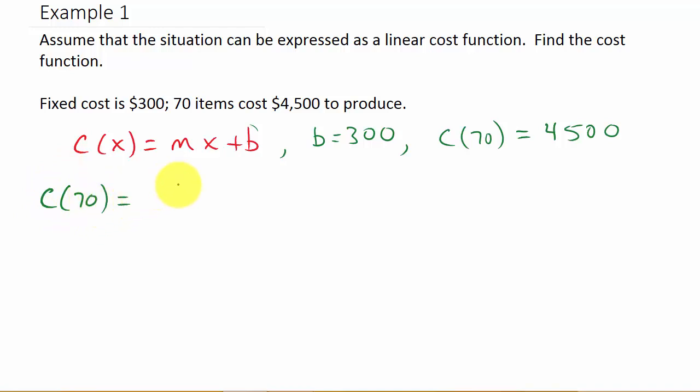So I have C(70) is m times 70. See, I don't know what m is, but I'm plugging 70 in for x plus b. Well, what's b? b is 300. And C(70) is equal to what? $4,500. So look at this, I've got an equation to solve.